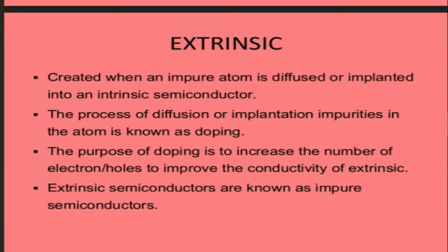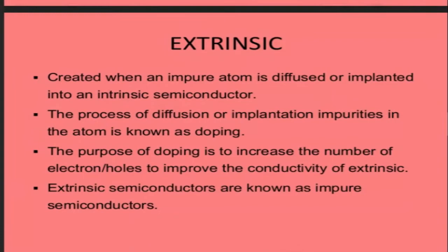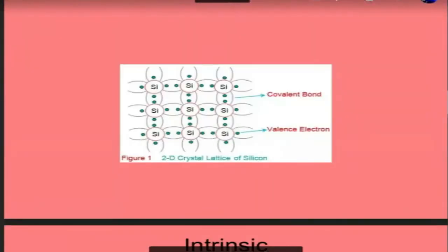An intrinsic semiconductor with impurity added becomes an extrinsic semiconductor. The impurity is not just any material — there are two types of impurity, and according to the type of impurity, the semiconductor material will have its own type. Extrinsic semiconductors are created when an impure atom is diffused or implanted into the intrinsic semiconductor.